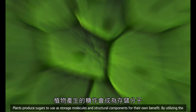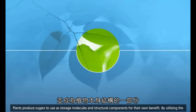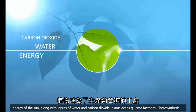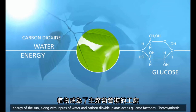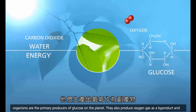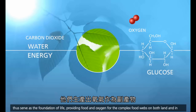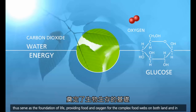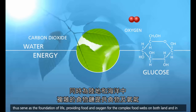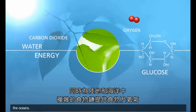Plants produce sugars to use as storage molecules and structural components for their own benefit. By utilizing the energy of the sun, along with inputs of water and carbon dioxide, plants act as glucose factories. Photosynthetic organisms are the primary producers of glucose on the planet. They also produce oxygen gas as a byproduct and thus serve as the foundation of life, providing food and oxygen for the complex food webs on both land and in the oceans.